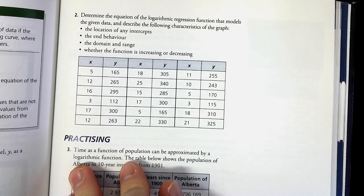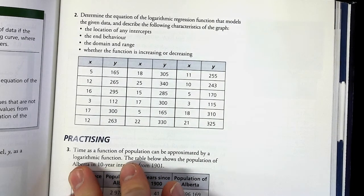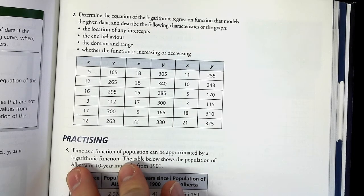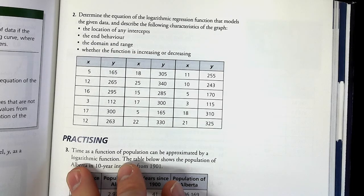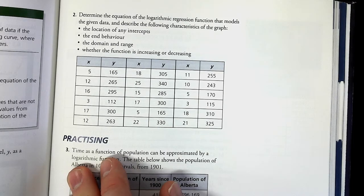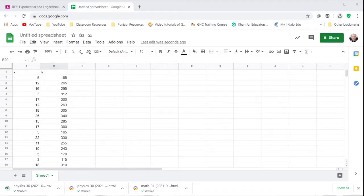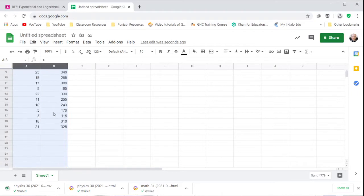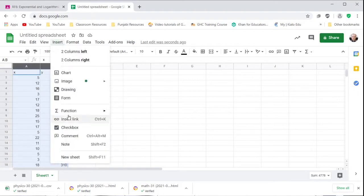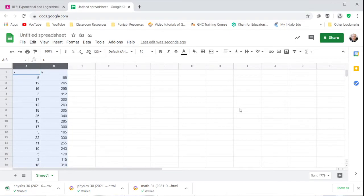For question 2, we need to determine the equation of the logarithmic regression function that models the given data and describe the following characteristics of the graph. So for that, we need to start entering everything into the calculator or into a spreadsheet in order to get this data. I will do that quickly. You can enter things really quickly when you can pause the recording. But I have entered all of our data. And I'm going to insert a chart.